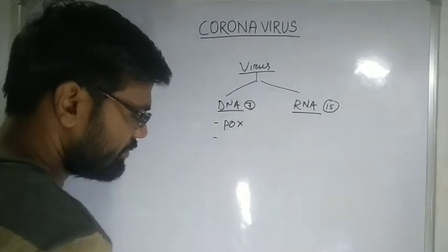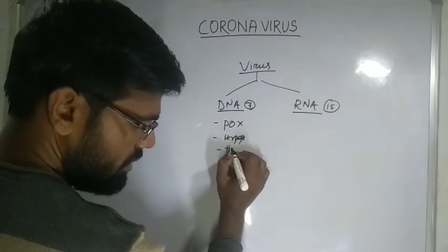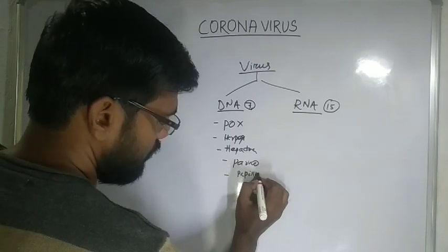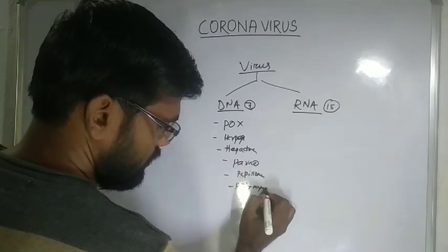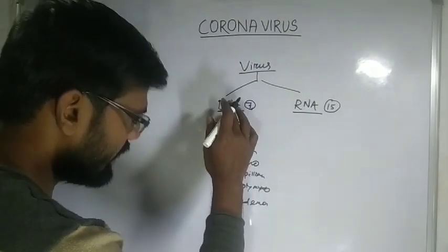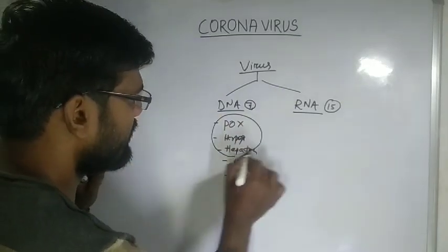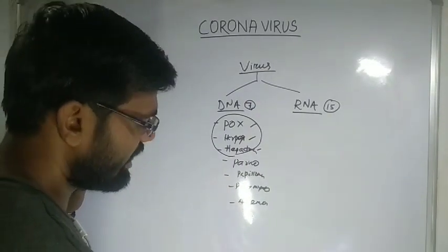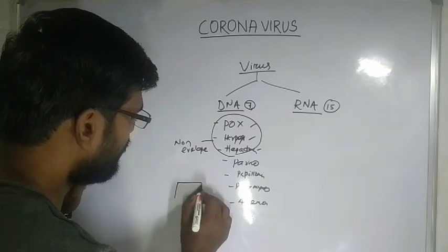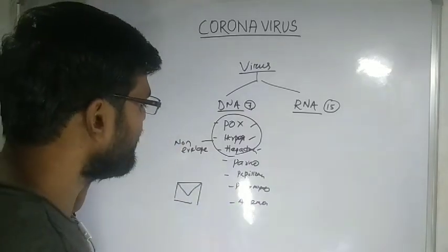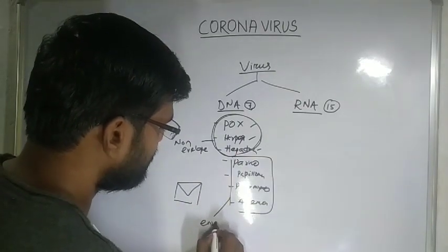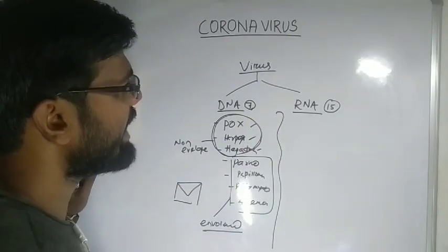In the DNA virus family, the seven members are: pox, herpes, hepadona, parvo, papilloma, polyomyco, and adenovirus. The first three — pox, herpes, and adenovirus — are generally non-enveloped, meaning they have no covering around them, while the remaining four are enveloped viruses.